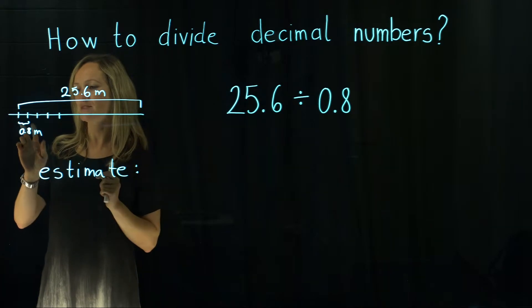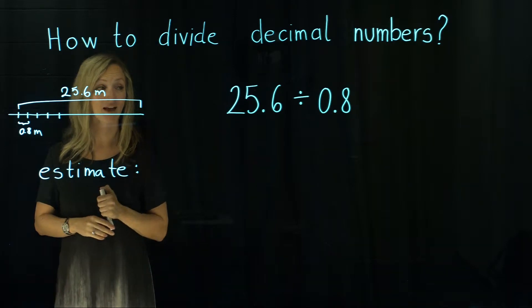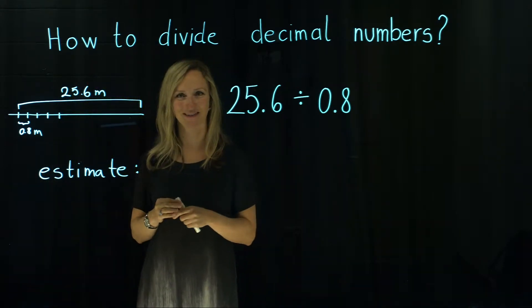We know that between two plants we should have 0.8 meters of distance. So we would like to know how many plants do we need for this hedge?